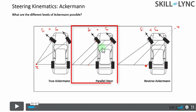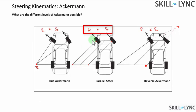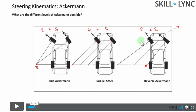The second configuration is what you call as parallel steer. In this particular case, the perpendiculars that you draw from the front tires do not intersect at all. In this case, delta i and delta o are exactly the same — the angle made by the inner and outer tires are exactly the same.